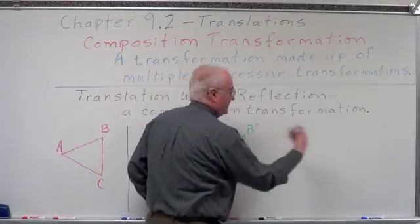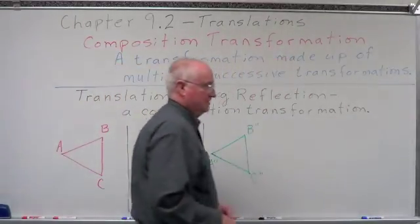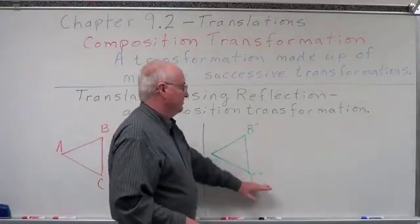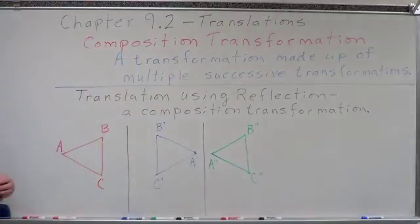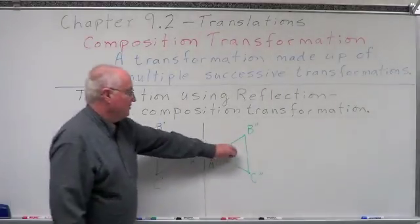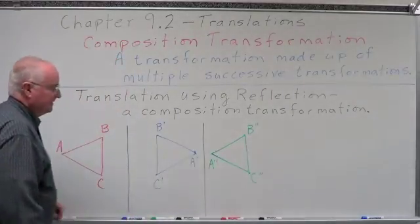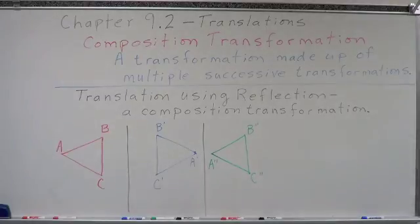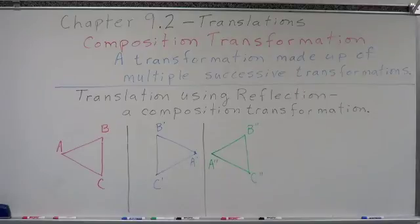We could keep doing this — each time adding another tick mark to the letters to indicate which copy it is. We start with a pre-image, create an image; that image becomes a pre-image, and we create a new image. That's a reflection across two parallel lines, which creates a translation. Remember, a translation is an isometry — a congruence transformation that maintains all the properties of an isometry.